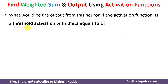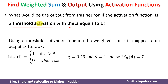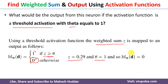Coming back to the first activation function — the threshold activation function — where theta is equivalent to 1. According to the threshold activation function, whenever the weighted sum Z is greater than or equal to the theta value, the output will be 1. If the calculated weighted sum is not greater than or equal to theta, the output will be 0. The calculated weighted sum is 0.29, the theta given is 1. Since 0.29 is not greater than or equal to 1, the output will be 0.